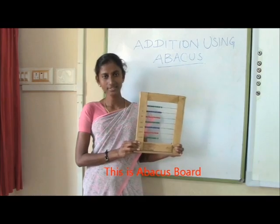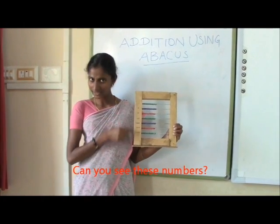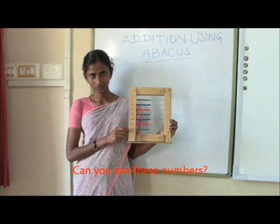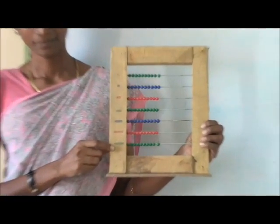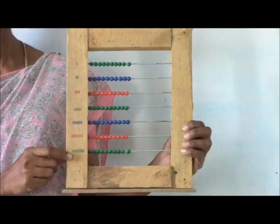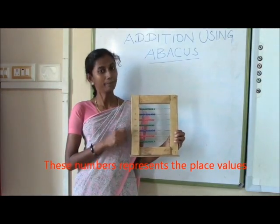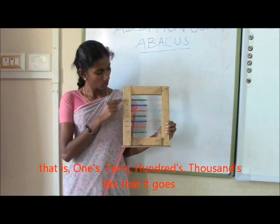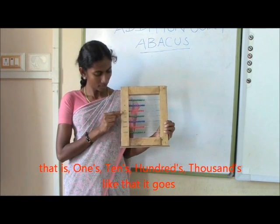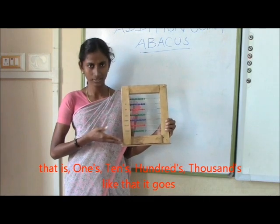This is abacus board. Can you see these numbers? These numbers represent the place value, that is ones, tens, hundreds, thousands. Like that it goes.